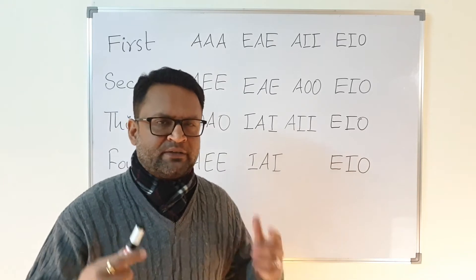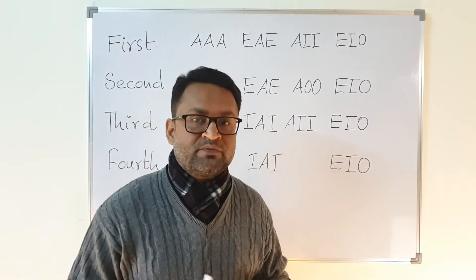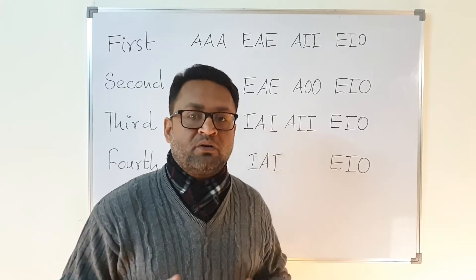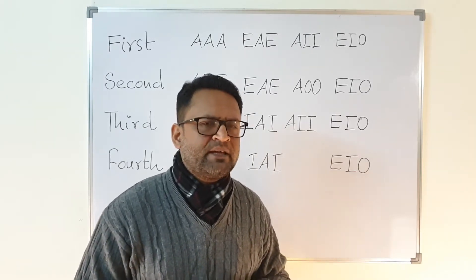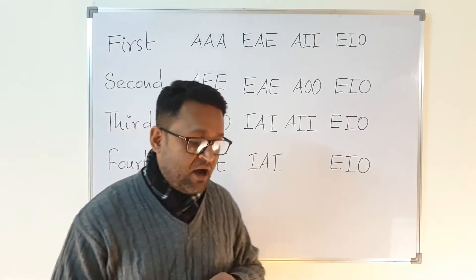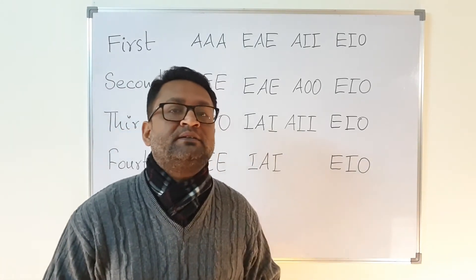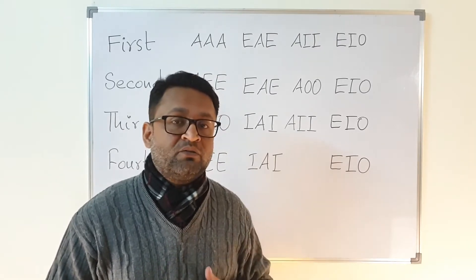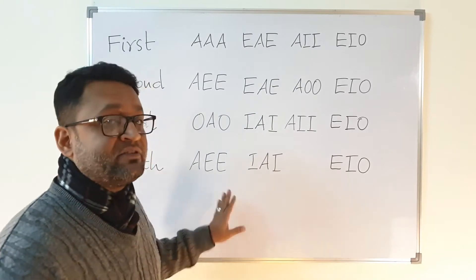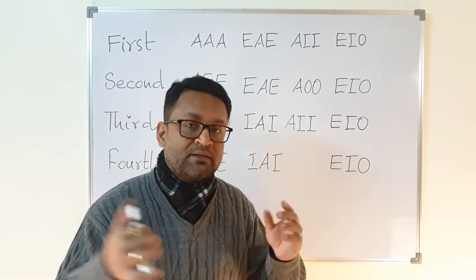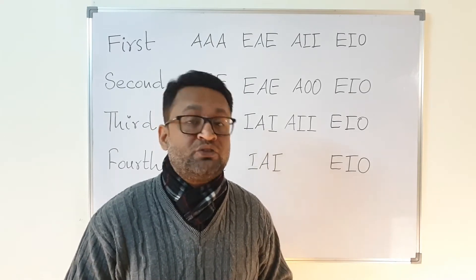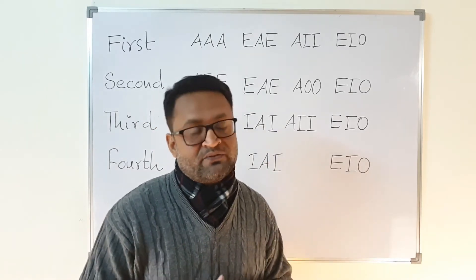Welcome to the debate on the number of valid syllogisms. In our book or in the modern understanding there are 15 syllogisms which are valid, as you can see in the list. However, Aristotle only found 14 syllogisms valid, only in three figures, because he could not discover the fourth figure. But in the medieval era, logicians found 24 syllogisms valid.